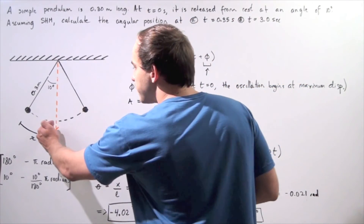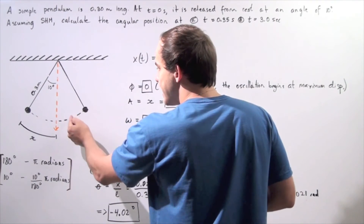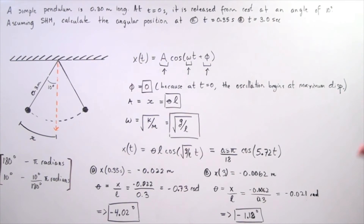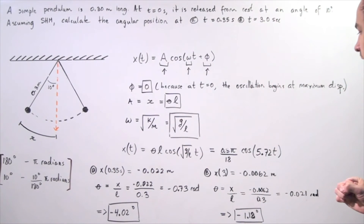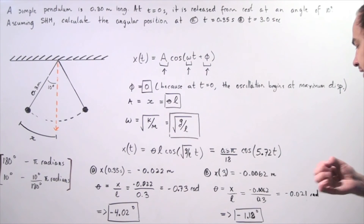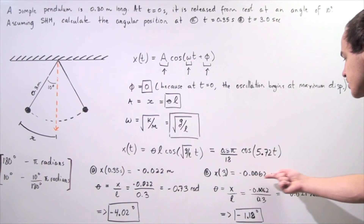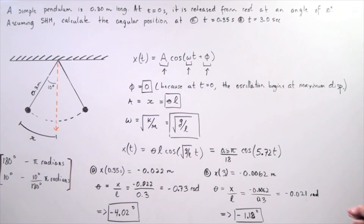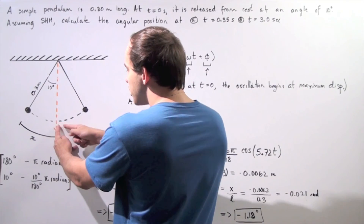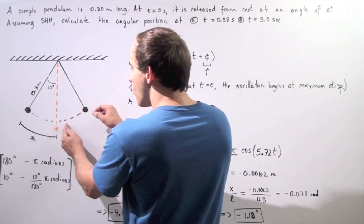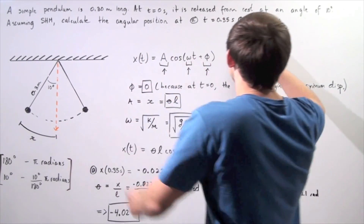For part (b), we follow the same steps. We take our position function, plug in t equals 3 seconds, and get a value of negative 0.0062 meters. Converting to radians: negative 0.0062 divided by 0.3 gives negative 0.021 radians. Multiplying by 180 and dividing by pi to convert to degrees, we get negative 1.18 degrees. The negative again means we're on the negative arc side, so after 3 seconds our object is at approximately negative 1.18 degrees — very close to the center.